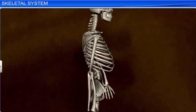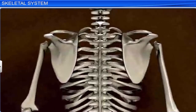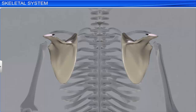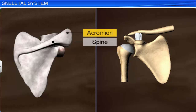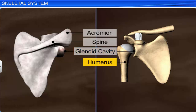The scapula is situated between the second and seventh ribs on the dorsal side of the thorax. It has a slightly elevated ridge called a spine, which projects as a flat, expanded process called the acromion. Below the acromion is a cup-shaped cavity called the glenoid cavity, into which fits the head of the humerus to form the shoulder joint.